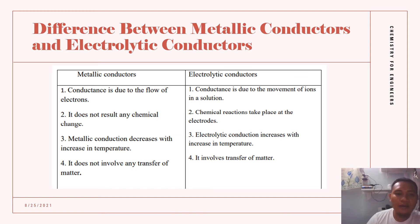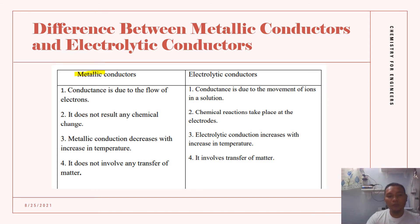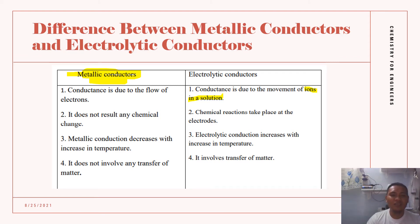Now, the difference between metallic conductors and electrolytic conductors: in metallic conductors, the conductance is due to the flow of electrons, while in electrolytic conductors, the conductance is due to the movement of ions — positive and negative ions, like in a battery. Also, metallic conductors do not result in any chemical change, while in electrolytic conductors, like in a battery, chemical reactions take place at the electrodes.